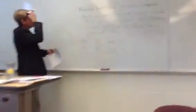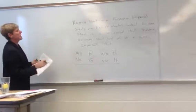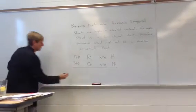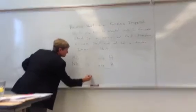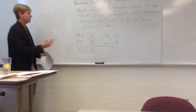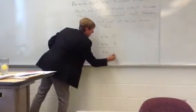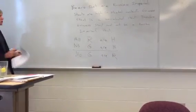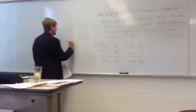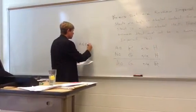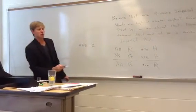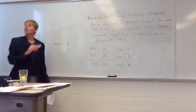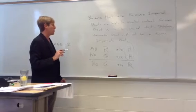Now, my conclusion is Guinness stout must not be a Russian imperial stout. That will be no beer that is G, no G are R, R for Russian imperial stouts. Now, this one is an AEE2 syllogism because you'll see our middle term is the predicate of the major and minor premise.